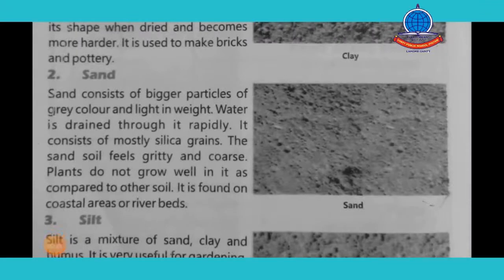Sand is made of big particles, grey in colour and light in weight. Water is easily drained through it and water retention is low. Sandy soil is made of silica grains. If we let sand fall from hand to hand, the texture feels hard and coarse. Plants do not grow well in sandy soil.